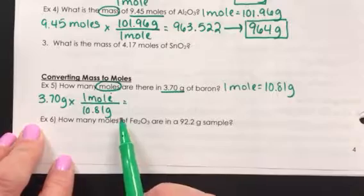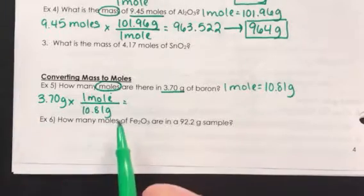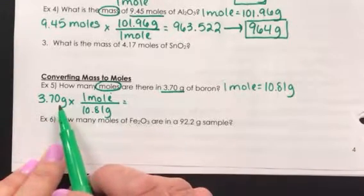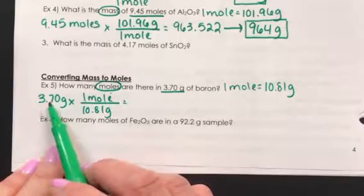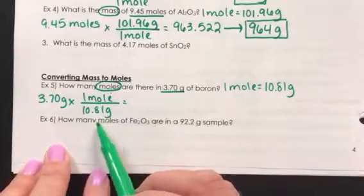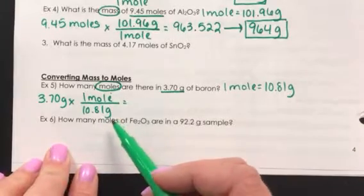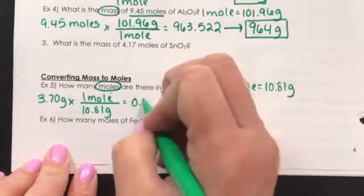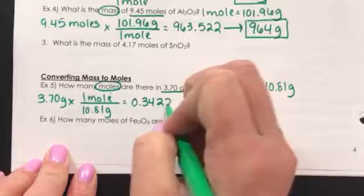Even though this looks a little different than what you're used to, you're really just multiplying this 3.7 by a fraction. So it'll be 3.7 times 1, and then divide it by 10.81 on your calculator. That answer comes out at .34227.